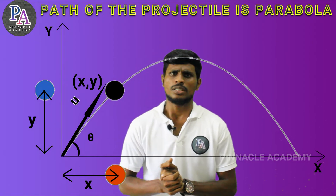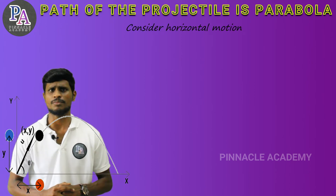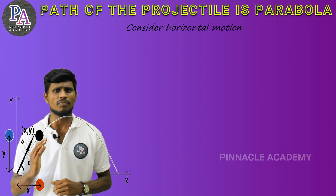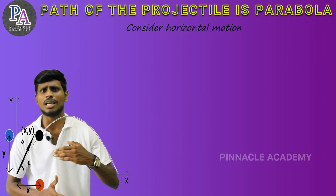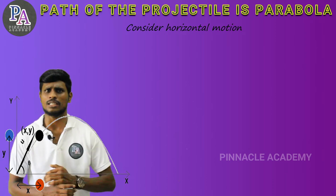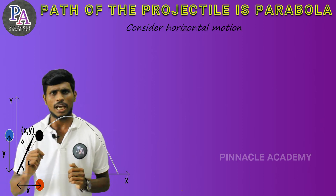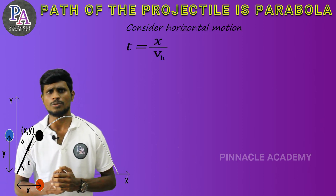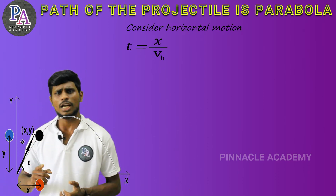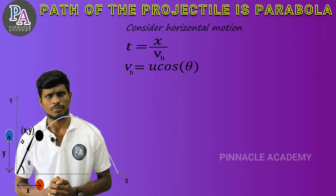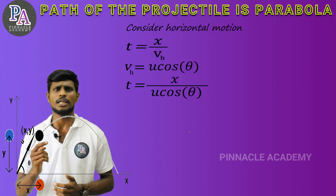Now let's take a derivation. I am going to consider this horizontal motion. Velocity is equal to displacement by time. This equation applies to horizontal motion — this is a non-acceleration motion. Time is equal to displacement by velocity. Time t is equal to x by u cos theta.